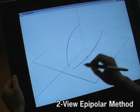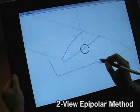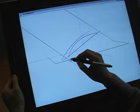For the two-view epipolar method, the user draws two projected images of a 3D curve from different viewpoints. The system then creates a unique 3D curve.